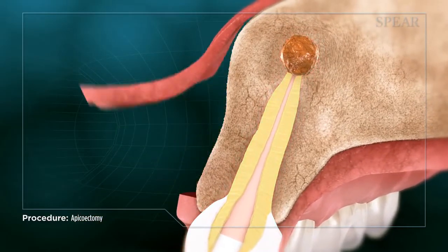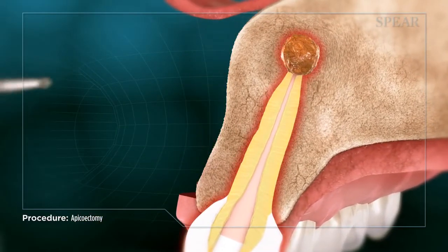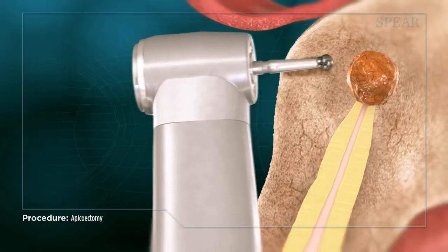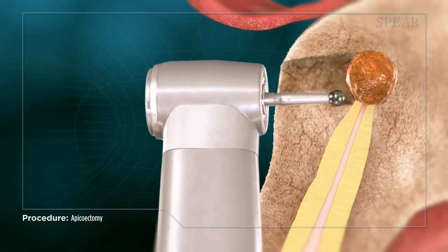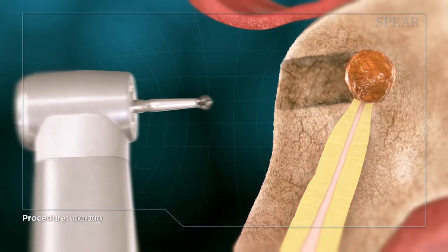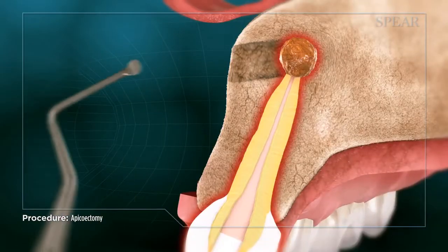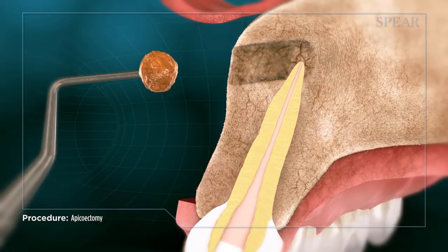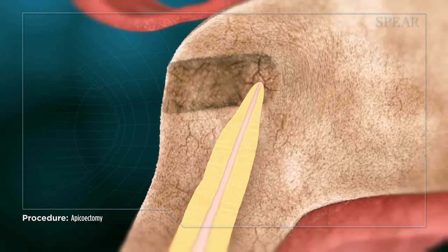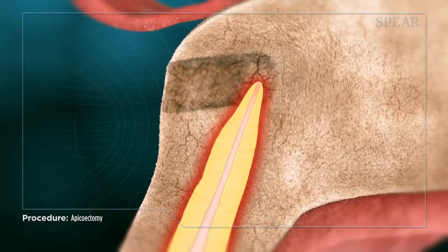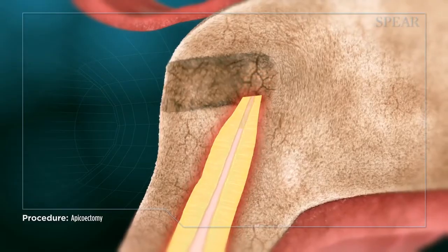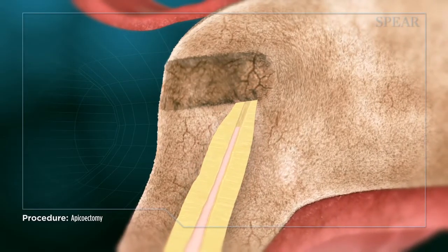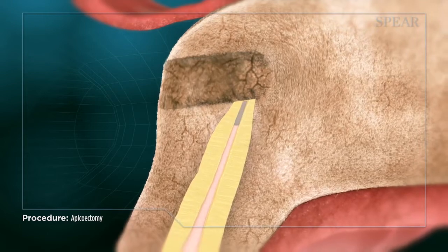An apicoectomy involves your doctor accessing the infection through a small opening created above the tooth. The infected tissue is then removed from the area. Next, the tip of the root is slightly reduced to remove any additional infection, and then the opening is cleaned and filled with a special material.